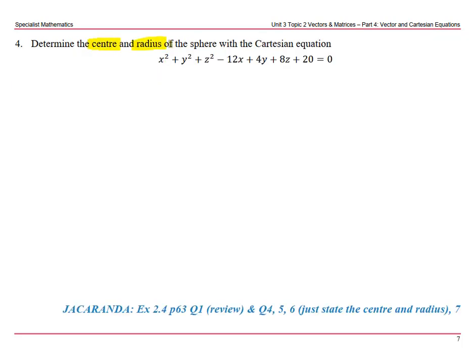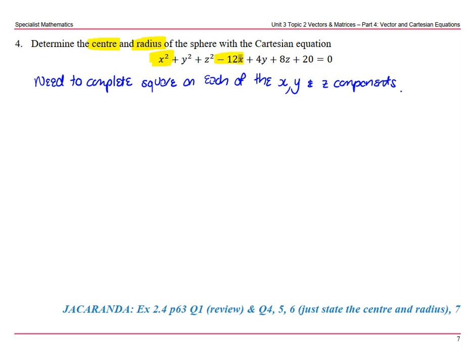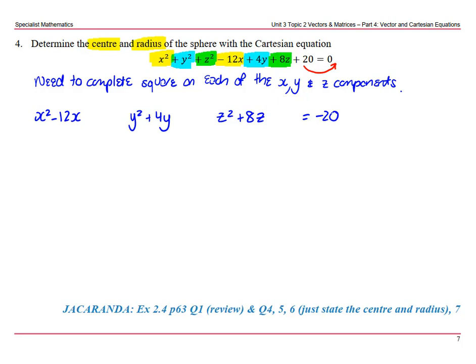One more example: determine the centre and radius of a sphere with the given Cartesian equation. The key here is we need to complete the square in each of the x, y, and z components. So let's separate: we have x² − 12x, y² + 4y, and z² + 8z. We take the constant +20 to the other side, giving us negative 20 on the right. To complete the square, starting with −12: we add (−12/2)², which is 36, to both sides.